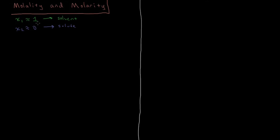In addition to mole fraction, we have the definition of activity, where the activity of the solvent equals the vapor pressure of the solvent divided by the vapor pressure of the pure liquid under the same given conditions — that is, when its mole fraction is exactly 1. We also have activity coefficients: the activity coefficient of the solvent is its activity divided by its mole fraction. For an ideal solution, the activity coefficient equals 1, because the activity is an analog for the mole fraction in our equations. This reduces to Raoult's law under ideal conditions.